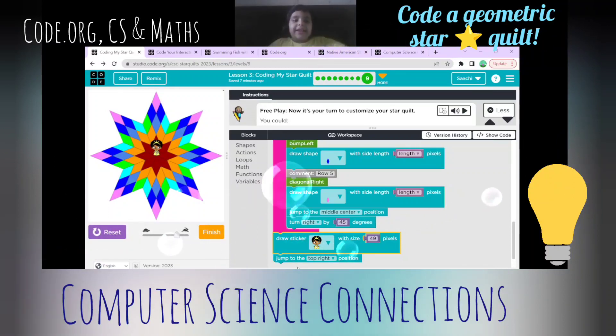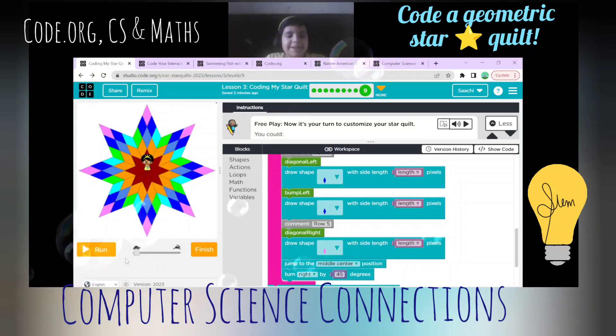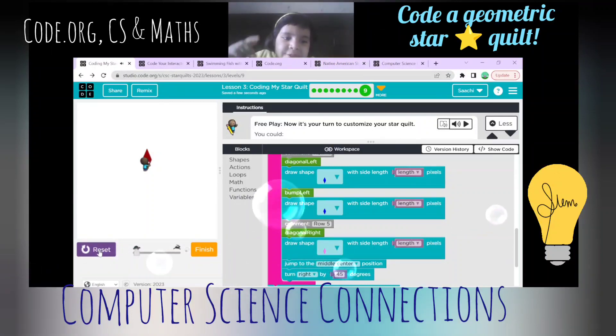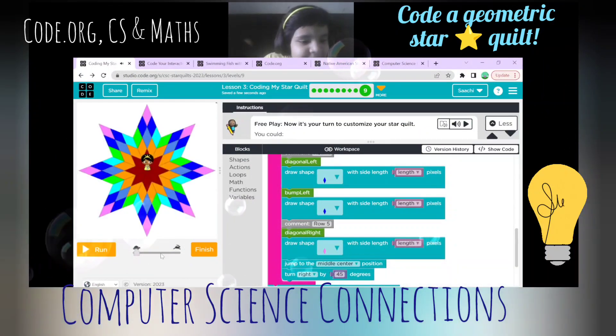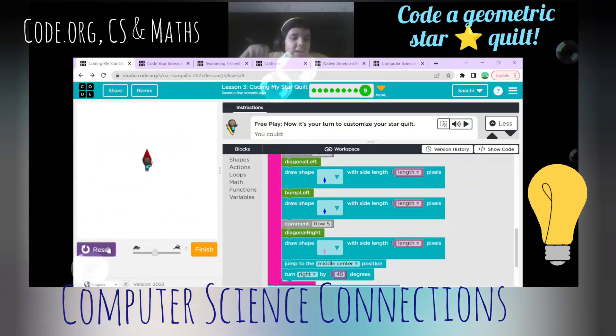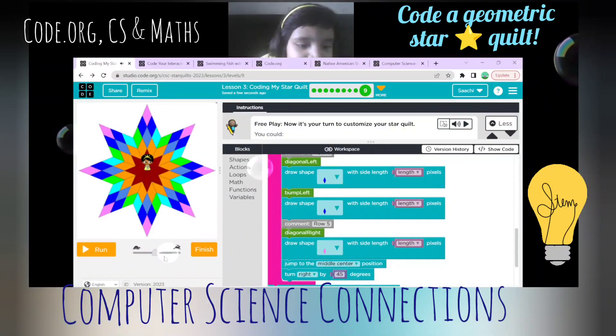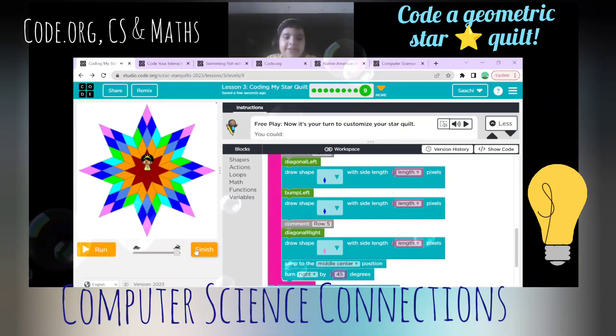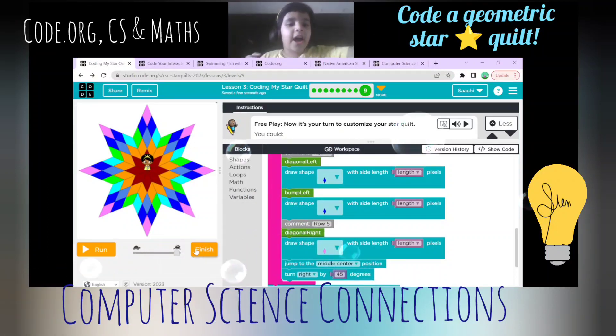And now your star quilt is complete. If you want the slow speed, you have to put the slider at the tortoise. If you want medium speed, then keep it in the middle. And finally fast, then you have to put it on the hare.